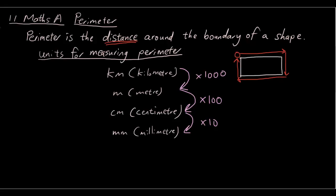And then if you're going backwards, from meters to kilometers, you would divide by 1000. From centimeters to meters, divide by 100. And from millimeters to centimeters, you would divide by 10.